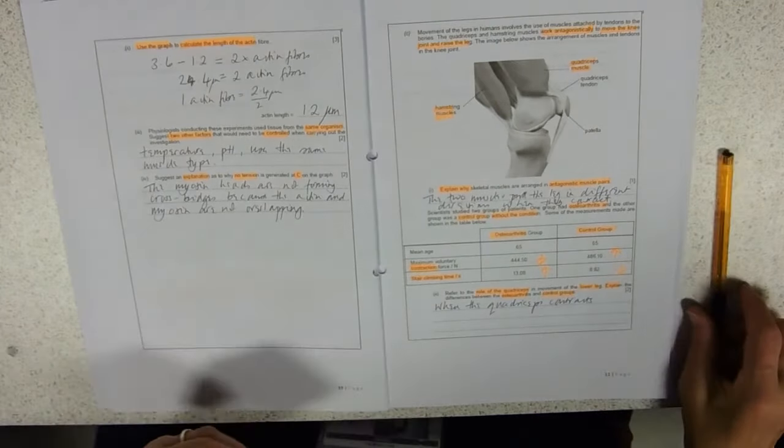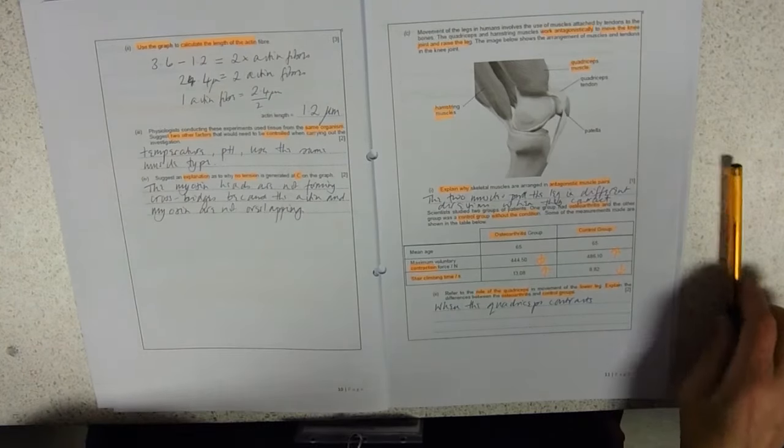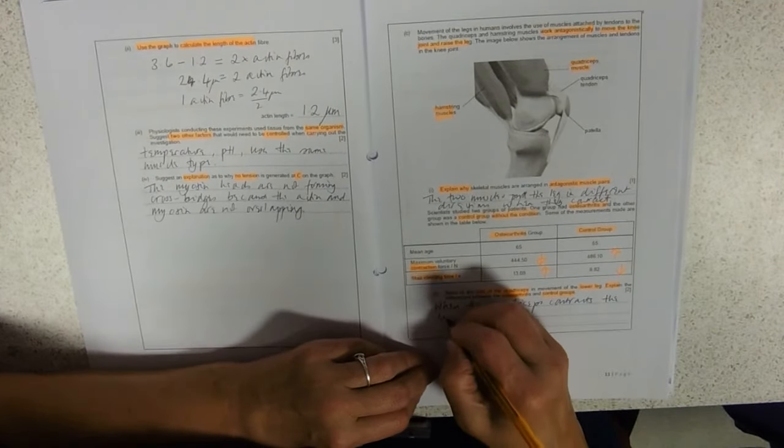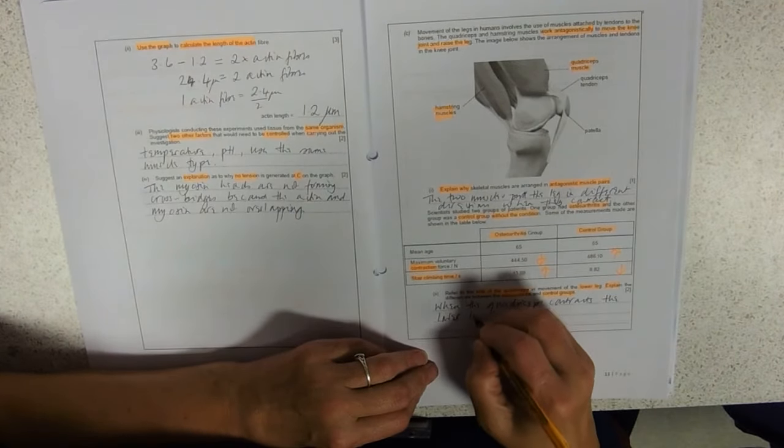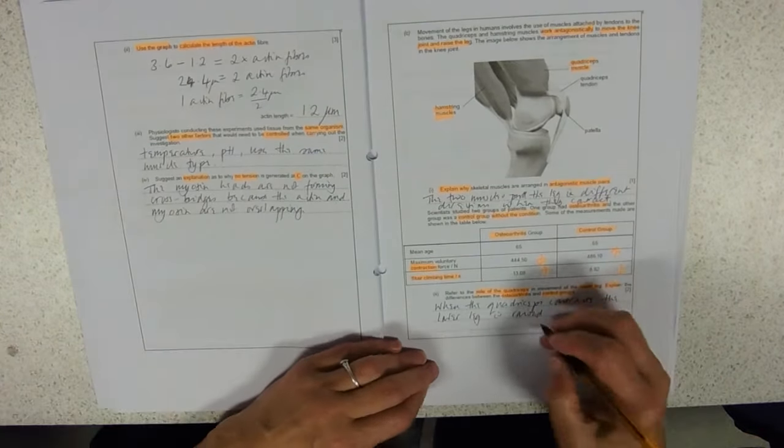So when the quadriceps contracts, grab your leg, contract your quadriceps. What happens? You raise your leg. The lower leg is raised. Apologies for all the sniffing. I've got a terrible cold.